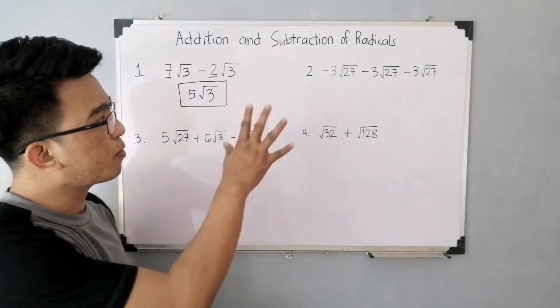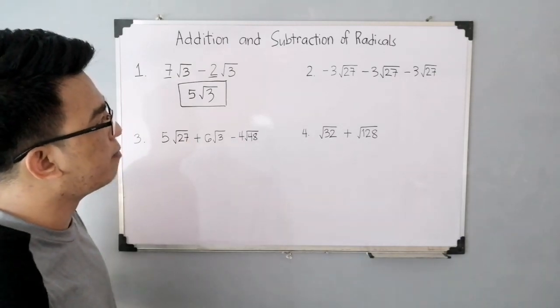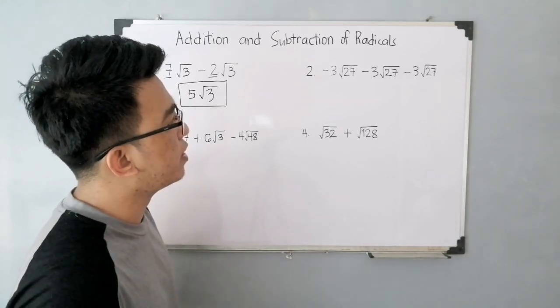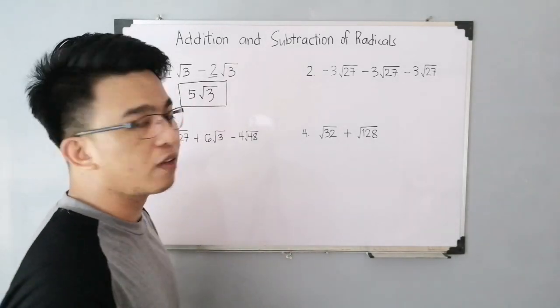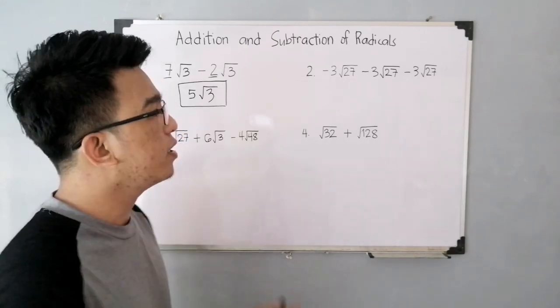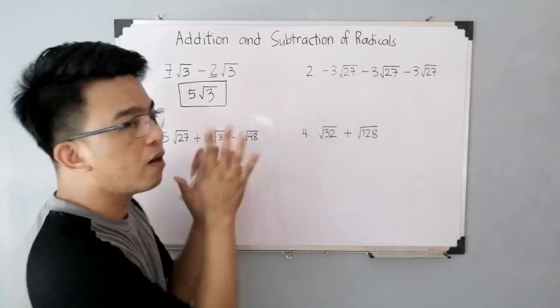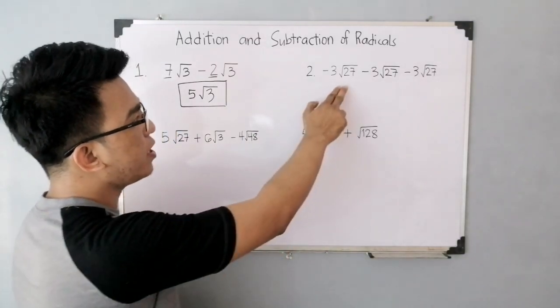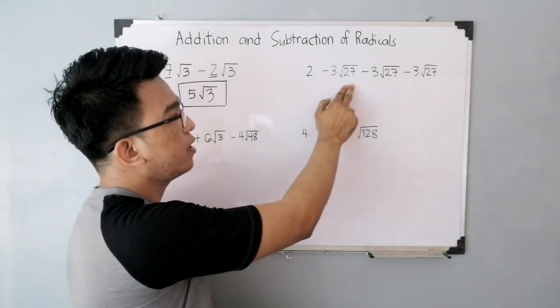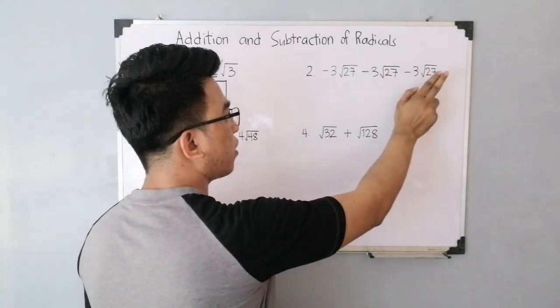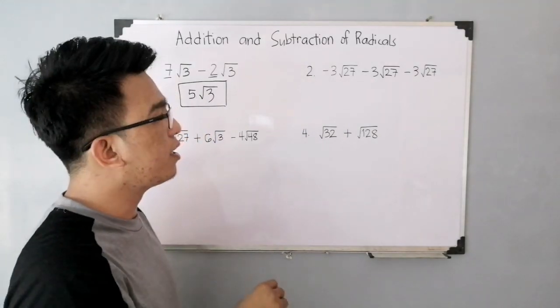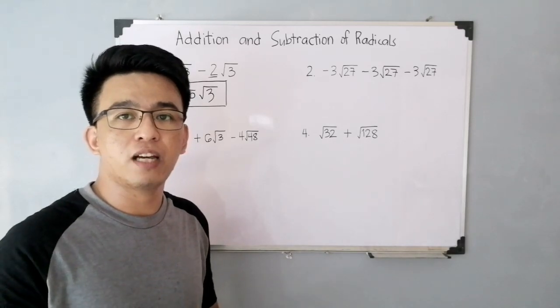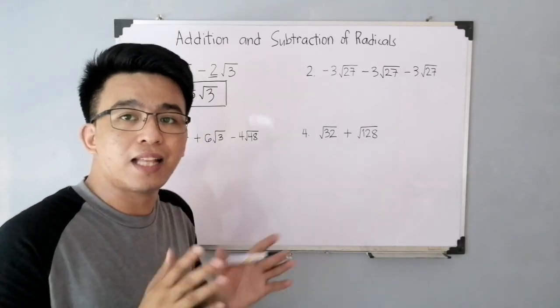Now, let's move on with item number 2. It looks tricky because it's very long, but it's actually very easy. You have negative 3 square root of 27, minus 3 square root of 27, minus 3 square root of 27. There are two ways to do this, but let me show you the method I teach. First, notice the square root of 27. They are common radicals, but the tricky part is we can still simplify them.